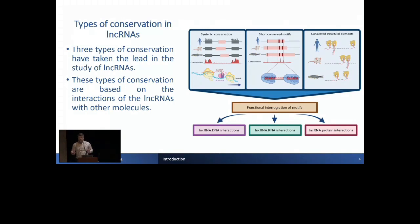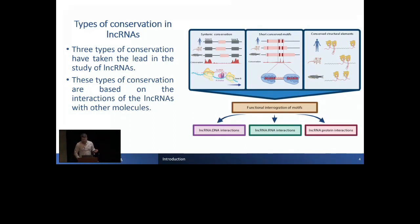Another type of conservation involves short sequence motifs. For example, the motifs in long non-coding RNAs that capture microRNAs are very important. The aim of this talk is the conservation of structural elements that preserve the ability of folding of long non-coding RNAs, and these structures can have conserved functions. These types of conservation reflect the interactions of long non-coding RNAs.